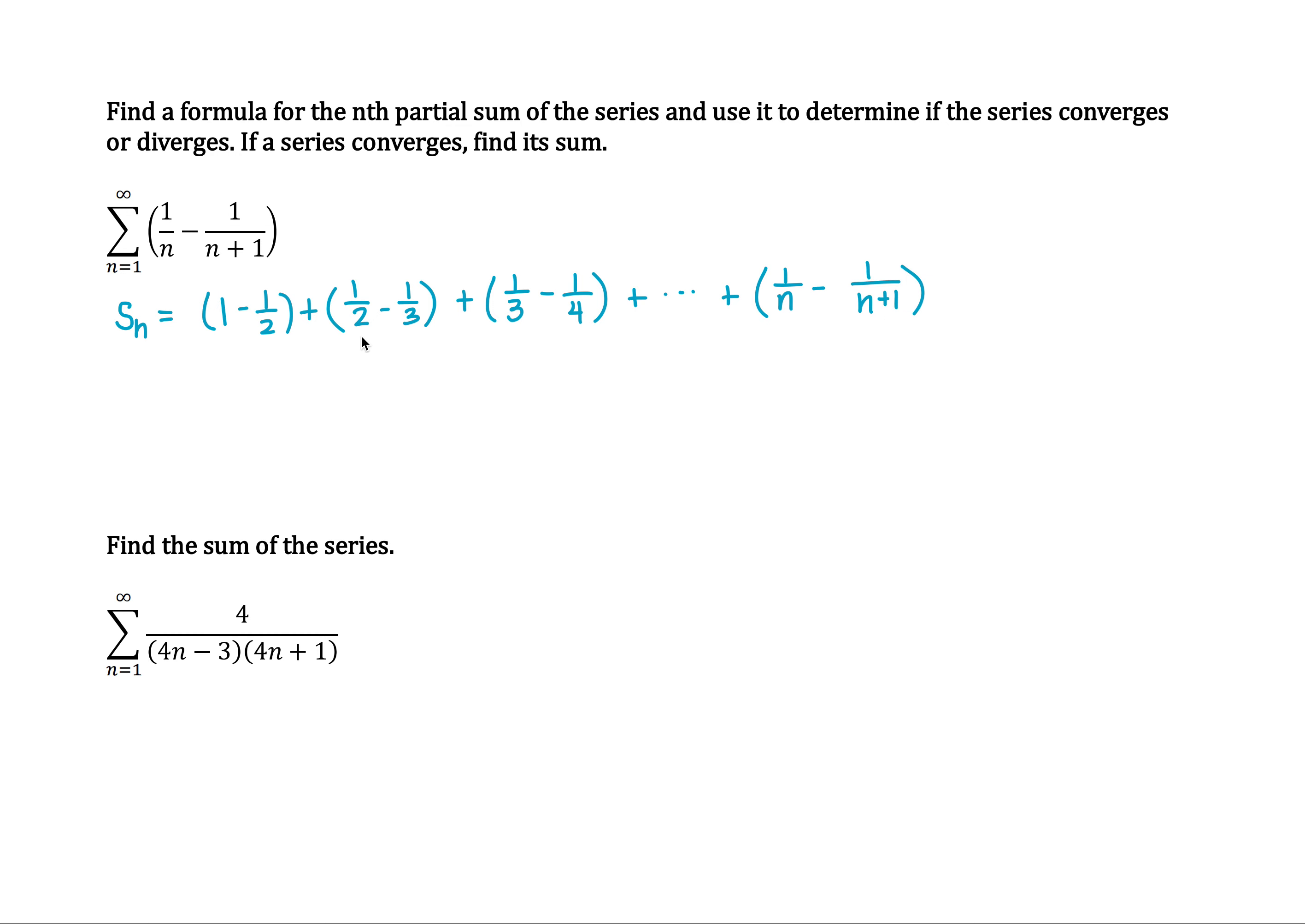Now in this case, hopefully you can see that the second term here is going to cancel with the first term here. So negative 1 half, positive 1 half will cancel. Negative 1 third, positive 1 third are going to cancel, and so on and so on.